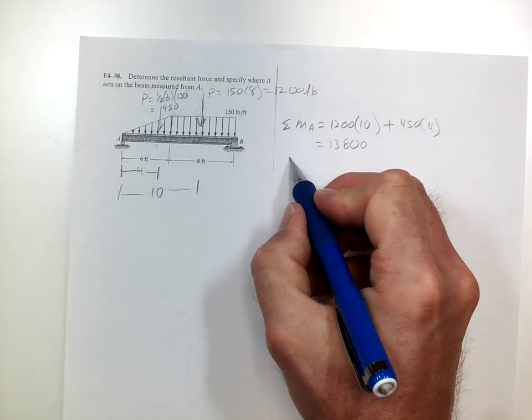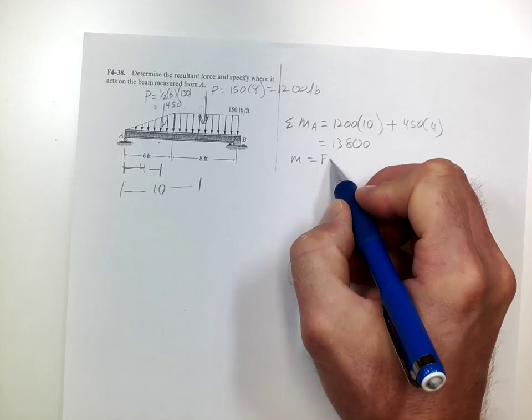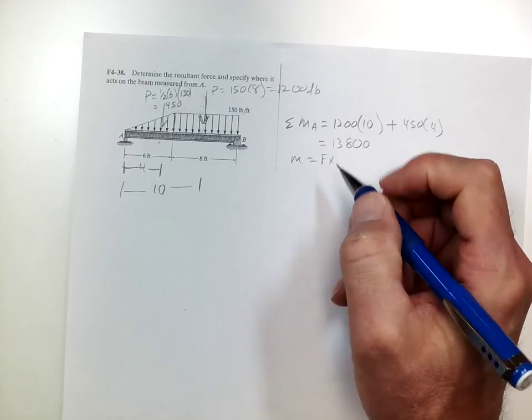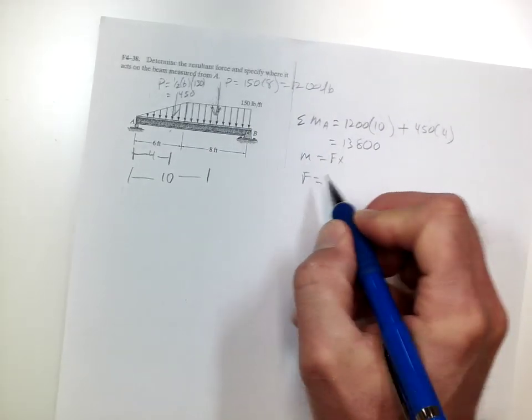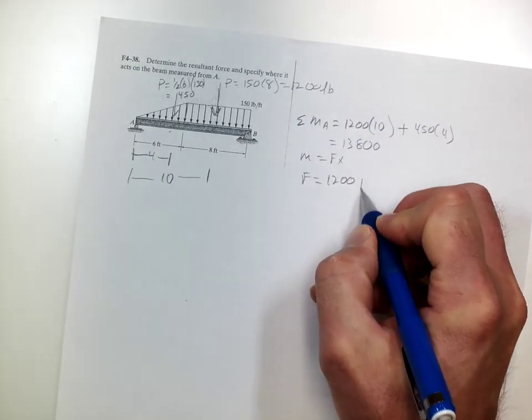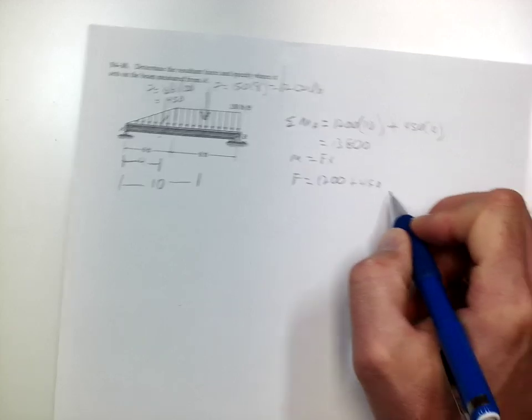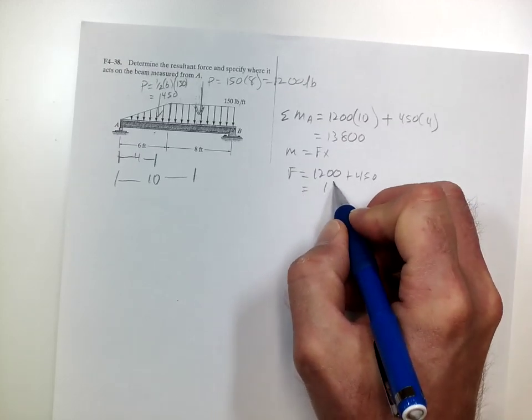So the moment equals the force times the distance. The total force here equals 1,200 plus 450, so that equals 1,650.